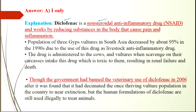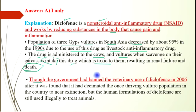Diclofenac is a non-steroidal anti-inflammatory drug that works by reducing substances in the body that cause pain and inflammation. The population of Gyps vultures in South Asia decreased by about 95% in the 1990s due to the use of this drug as a livestock anti-inflammatory drug. The drug is administered to cattle, and vultures feeding on their carcasses ingest the drug, which is toxic to them, resulting in renal failure and death. The government banned the veterinary use of Diclofenac in 2006 after it was found to have driven the once-thriving vulture population to near extinction, but the human formulation of Diclofenac is still used illegally to treat animals.